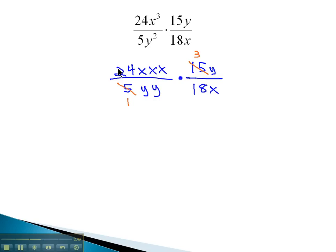18 and 24 are both divisible by 6. 18 divided by 6 is 3, and 24 divided by 6 is 4.